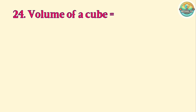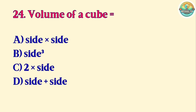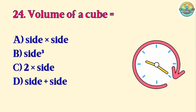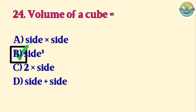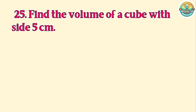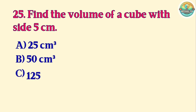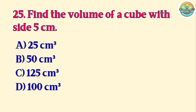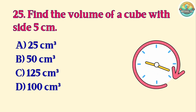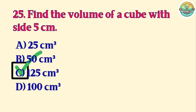Volume. Question 24. Volume of a cube equals: A. Side times side. B. Side cubed. C. Two times side. D. Side plus side. Correct answer is B. Side cubed. Question 25. Find the volume of a cube with side 5 centimeters. A. 25 cubic centimeters. B. 50 cubic centimeters. C. 125 cubic centimeters. D. 100 cubic centimeters. Correct answer is C. 125 cubic centimeters.